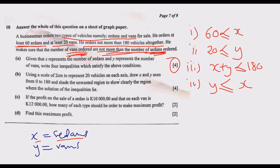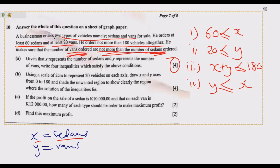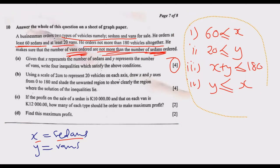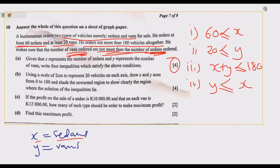Moving to part (b): using a scale of 2 centimeters to represent 20 vehicles on each axis, draw the x-axis from 0 to 180, and shade the unwanted region to clearly show the region where the solution of the inequalities must lie. We have the four inequalities ready to plot.